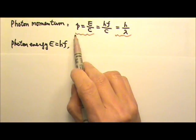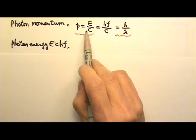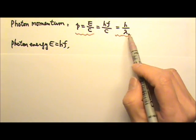It is a good idea for you to memorize that the photon momentum equals E over C and H over lambda.